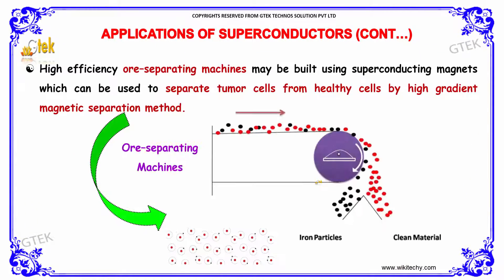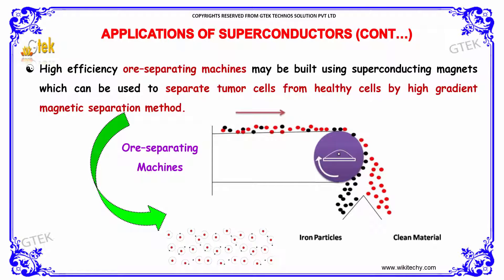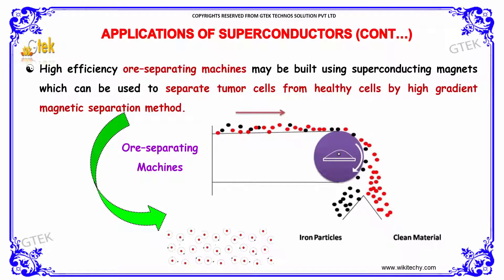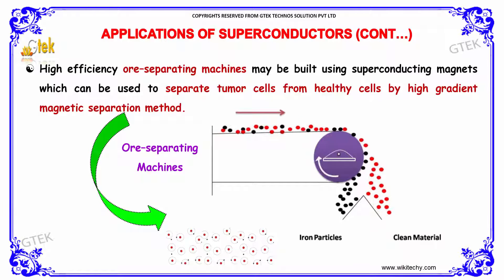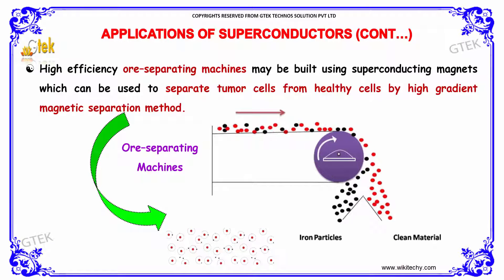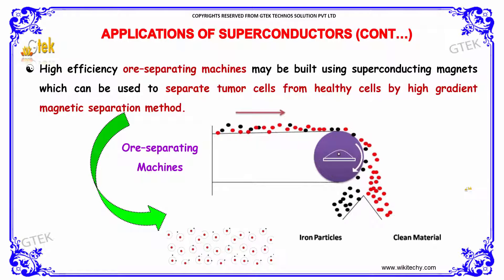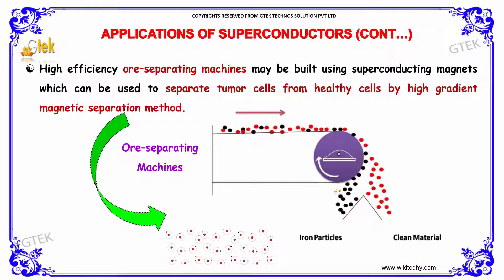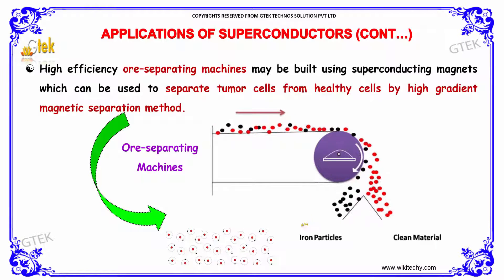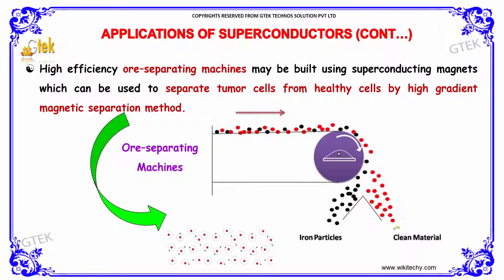It is used in ore separating machines. High efficiency ore separating machines can be built using superconducting magnets, which can be used to separate tumor cells from healthy cells by the high gradient magnetic separation method. You can see the ion particles here and the clean materials here.